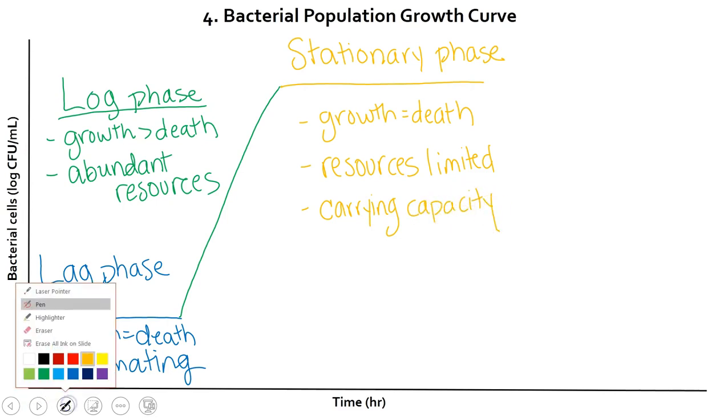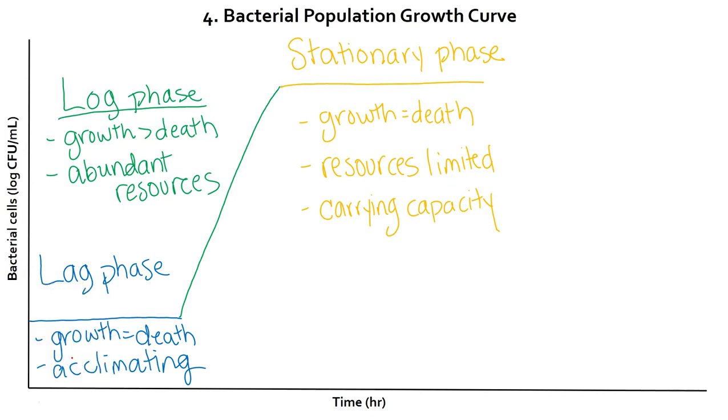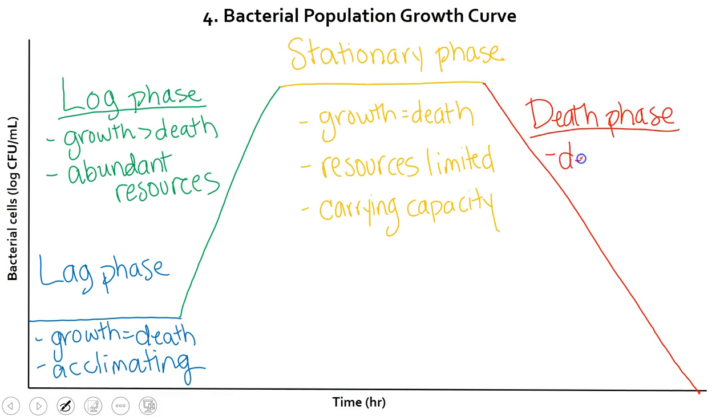Then our last phase is our death phase. In this phase, you can tell by the negative slope that death is greater than growth. Basically, the resources have run out. And as a result, all the bacteria die. So this is what we would see in our plate in the lab. Not usually happens in nature because bacteria can move and travel in nature.